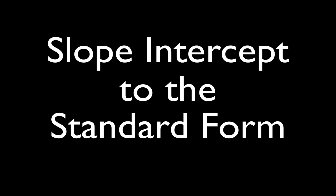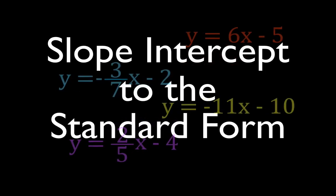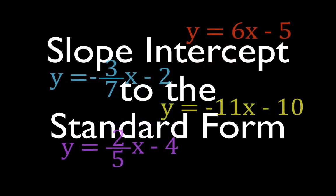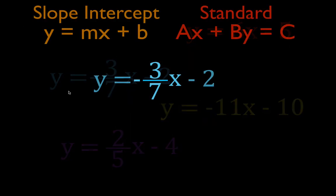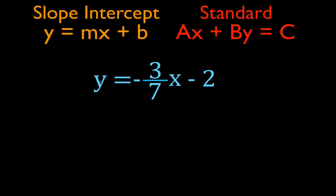In today's video, I'm going to show you how to convert the following linear equations from the slope-intercept form to the standard form. This is the first equation we're going to work on: y equals minus 3/7ths x minus 2.